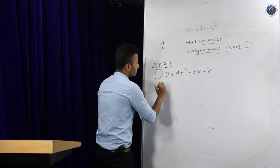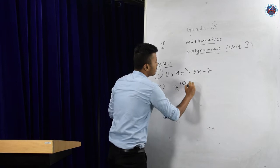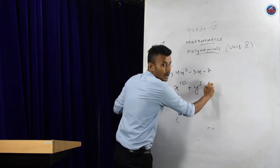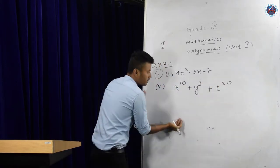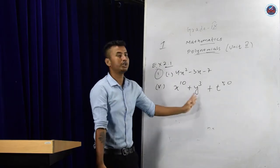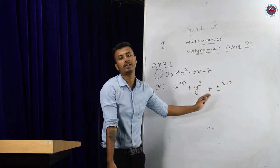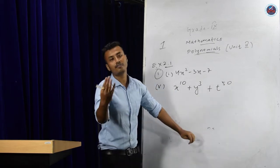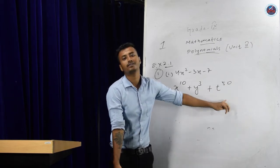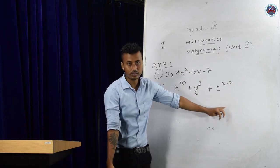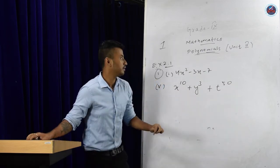The fifth expression is x¹⁰ plus y³ plus t⁵⁰. How many terms are here? Three terms. How many variables? Three variables — x, y, and t. This is a polynomial in three variables, not one.